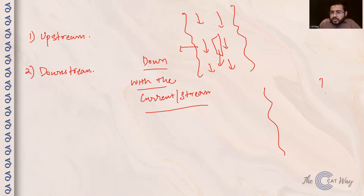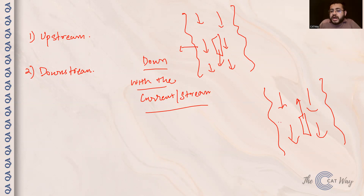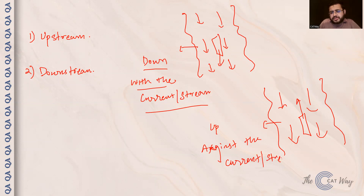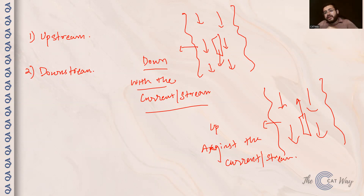Conversely, if the river is flowing downward and your boat is moving in the opposite direction — upward — then it is moving upstream. Upstream is also known as 'against the current.' So upstream means the boat is moving from bottom to top, against the flow of the river.